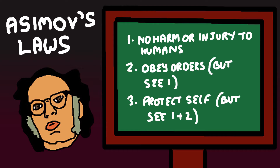These laws suffer from a number of pitfalls, including the definitions of human and robot, the assumption that a robot knows what all the consequences of its actions might be, and the potential requirement for robots to incessantly roam the Earth trying to cure all human ills.